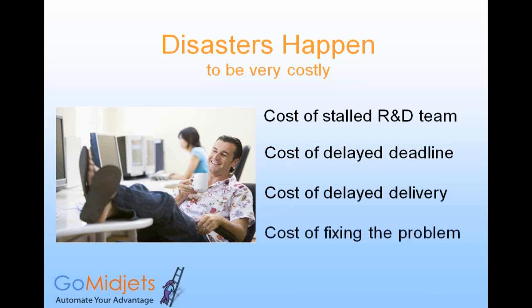This means that developers may lose access to the source code repository, causing development schedules to be delayed, which obviously could impact the deadline. Developers need reliable and uninterrupted access to the source code repository. The cost of preventing repository corruption is very low, and fixing a problem immediately after it occurs is also relatively inexpensive.